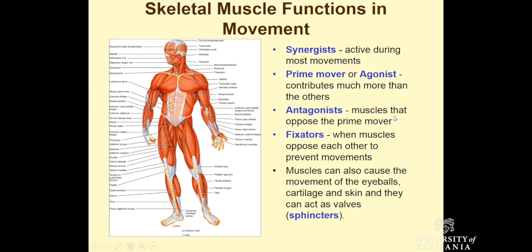An antagonist is a muscle that opposes the prime mover. In this case, our prime mover is the biceps. The muscle on the posterior surface, known as the triceps brachii, opposes that movement. The interaction between our agonist and our antagonist enables regulated, coordinated movement so that we're not just flopping around whenever our muscles are contracting — it's actually quite a controlled movement most of the time.